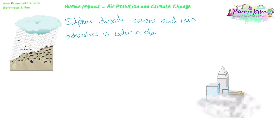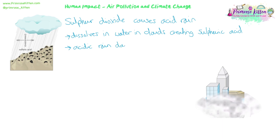That acidic rain then falls from the clouds and can damage trees, destroy leaves, and increase the acidity of ponds and lakes if a lot falls over fresh water. Changing the pH changes the habitat of the lake, and some animals can't survive in those pH levels. As biologists, the effects on living organisms are what matter most to us.